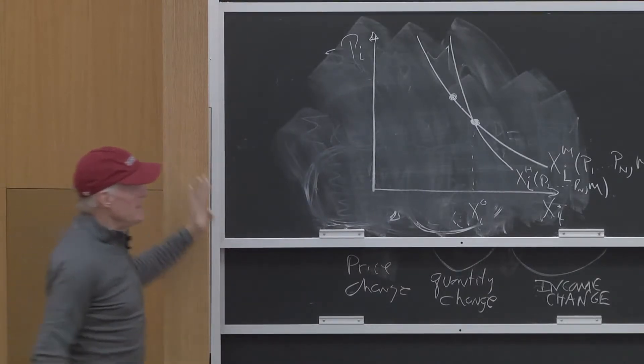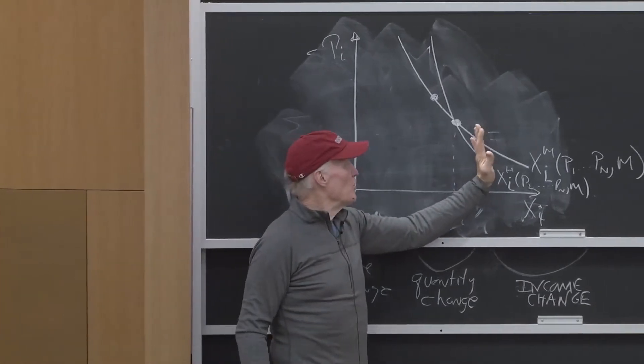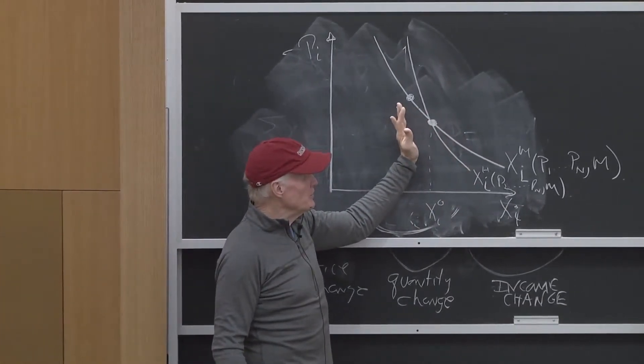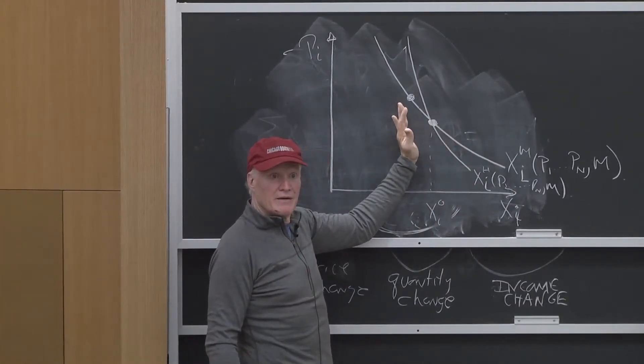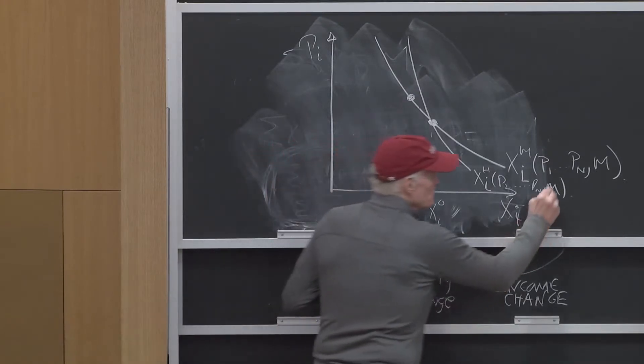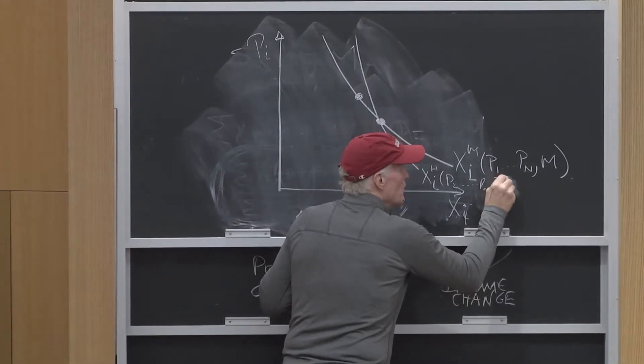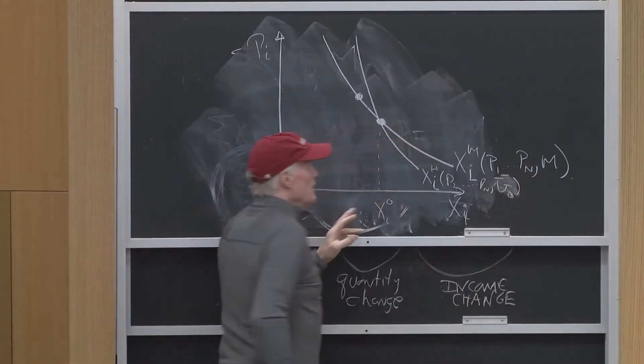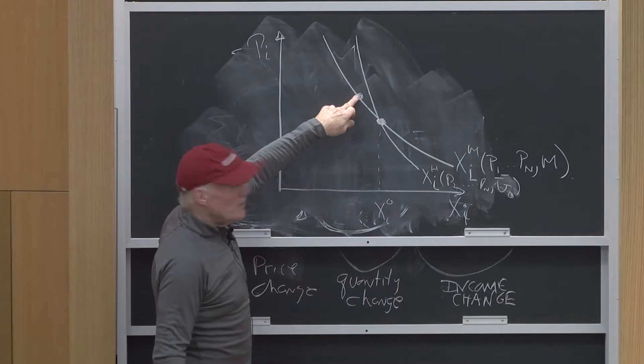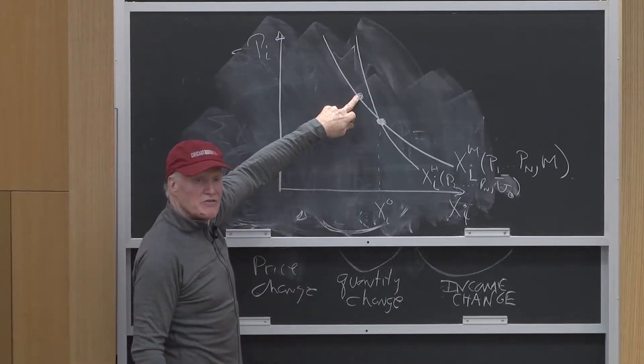So this is going to be a Hicksian demand curve corresponding to a lower utility level. This should be U bar. That's the Hicksian demand curve.